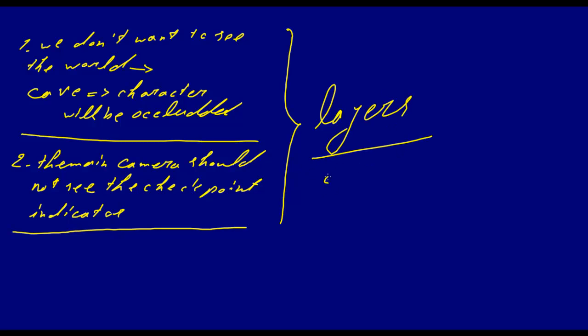So how will we achieve these two goals is just by using layers. So we'll have two layers. One, the radar layer. And the second one will be, let's say, main camera layer. Or no, let's call it world. It's better. So it will be world layer.